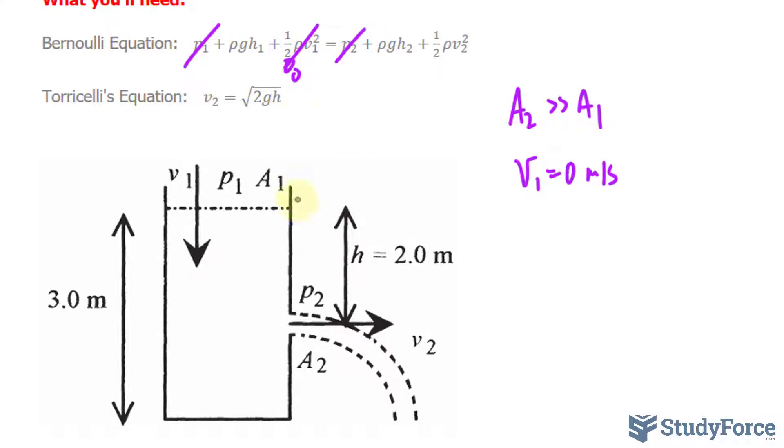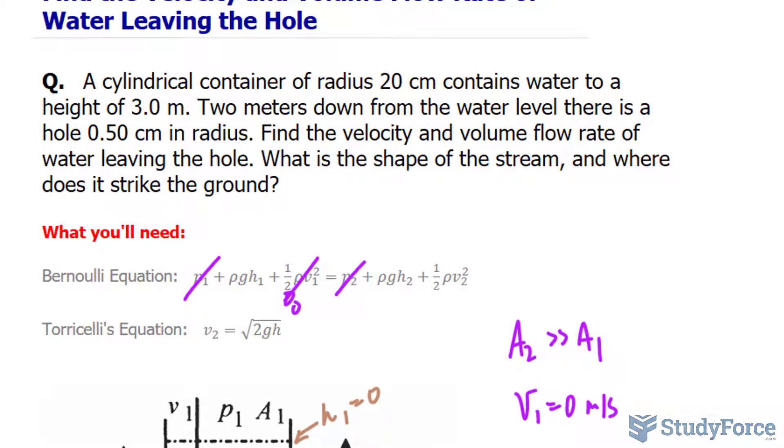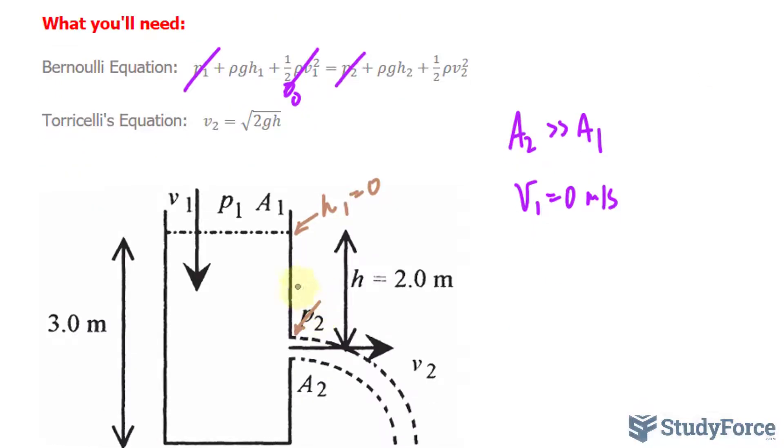I'll take the height here, h1, as equal to 0. And the height over here, since it says in the question 2 meters down, the height will be negative 2.0 meters. Therefore, it makes this term go to 0 as well because anything times 0, since h1 is set to 0, makes that 0.